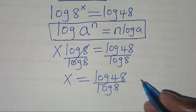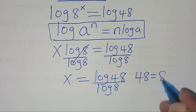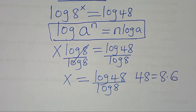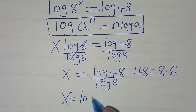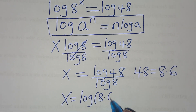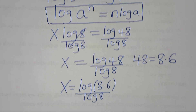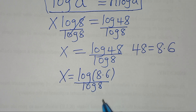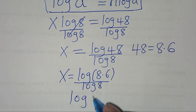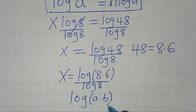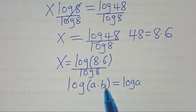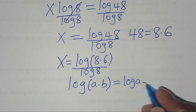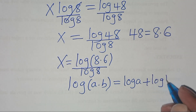We can express 48 as 8 multiplied by 6, so this means that x is equal to ln(8 × 6) divided by ln(8). Now ln(8 × 6) is in the form of ln(a × b), which we can express as ln(a) + ln(b).